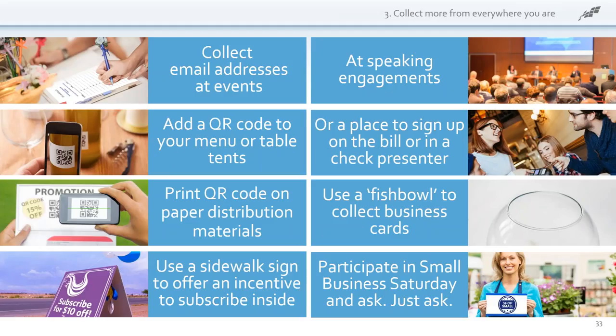Here are some places you can use to grow your email list. Events and speaking engagements — I've done a lot with speaking engagements. QR codes. Your menu or table if you're in a restaurant. On the bill, show it to them and get them to sign up. On paper distribution, if you have a flyer, great place to put QR codes. Fishbowl — maybe have a drawing of some sort, great for trade shows, restaurants, or gyms. Have some sort of giveaway and use that to collect business cards. But with the fishbowl, make sure you specify they're going to be on your email list — you want to make sure they're joining for the right reason, especially at trade shows where people throw cards in without knowing where they're going.